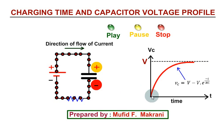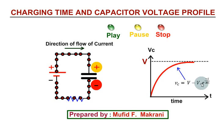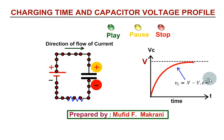The voltage is increasing exponentially, which can be given by this equation. Vc, that is the voltage across the capacitor at any instant, equals the maximum voltage minus V multiplied by e to the power minus t over RC. R is the charging resistor, C is the capacitance of the given capacitor, and RC is also called the time constant. Hope you have got my point. Thanks for watching.